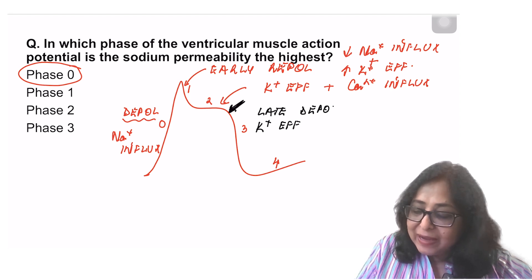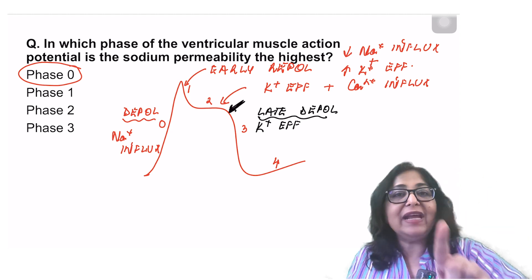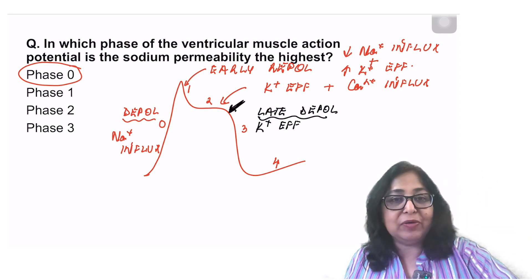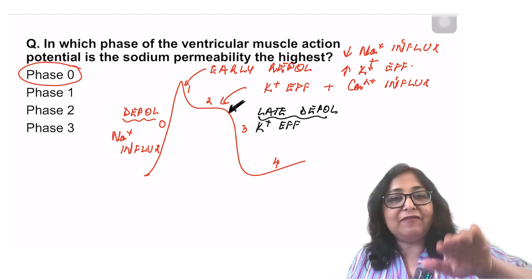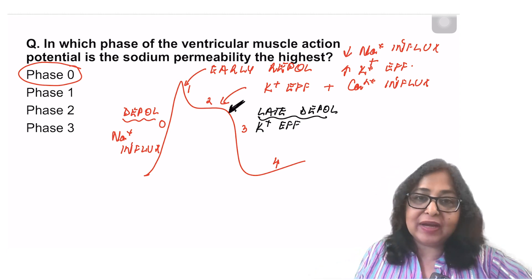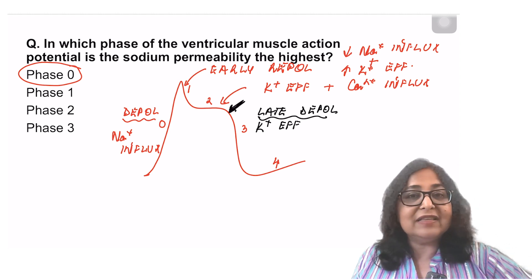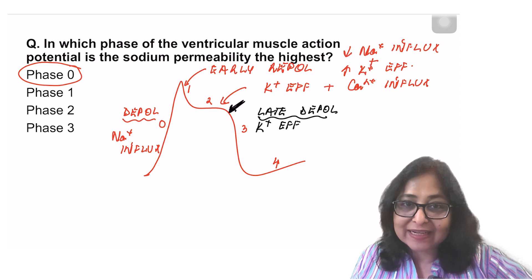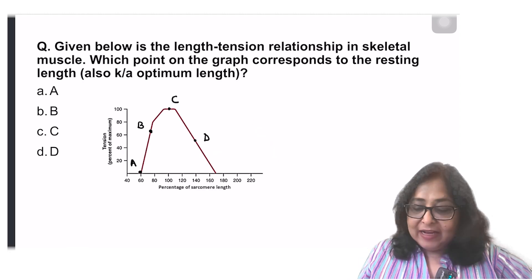Phase 2 is known as the plateau phase. Phase 0: depolarization. Phase 1: early repolarization. Phase 2: plateau phase. Phase 3: late repolarization. And phase 4: there is closure of the potassium channels. So the answer to this question becomes A.